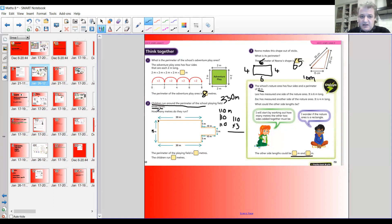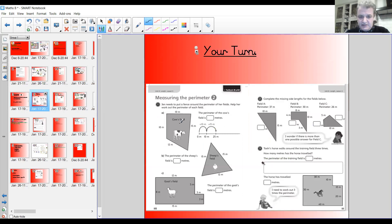So we're revisiting perimeter. This time we're calculating, we're using our knowledge, our math skills, our addition skills, our multiplication skills to work out the perimeter of certain shapes, certain 2D shapes, and relating to certain questions.